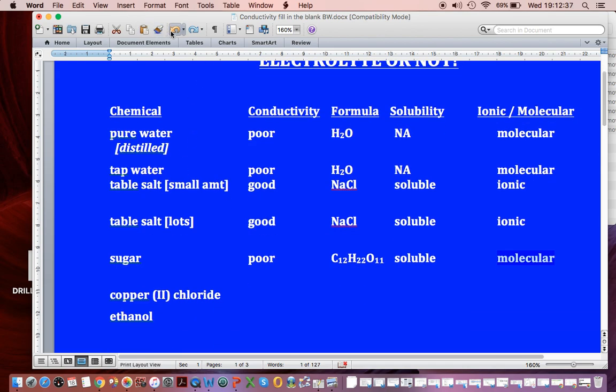We look at copper(II) chloride. And it was very good. There's its formula, CuCl2. We know it's soluble. And we know it's ionic.